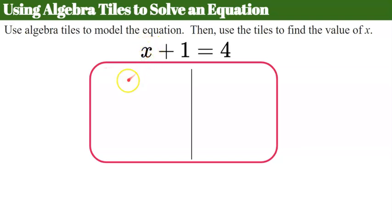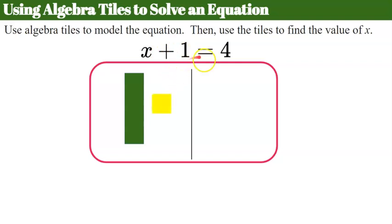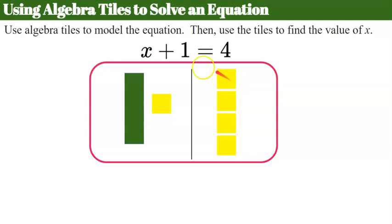We have an x, so I need a long green. And I have plus 1, so I'm going to add a yellow square. On the right side, after my equal sign, I need 4 yellows, because I need to have a total of positive 4 on the right side of my mat. So now this represents the equation x plus 1 equals 4.